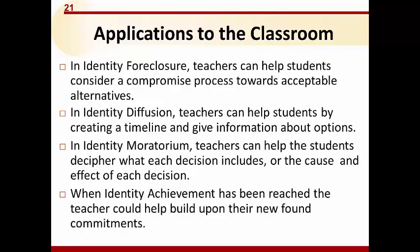How might these things apply to your classroom? If a student is in identity foreclosure, teachers can help them consider a compromise process towards acceptable alternatives. For identity diffusion, teachers can create a timeline and provide information about options. In identity moratorium, teachers can help students decipher what each decision includes — the cause and effect of each choice. When identity achievement has been reached, the teacher can help build upon their newfound commitments.